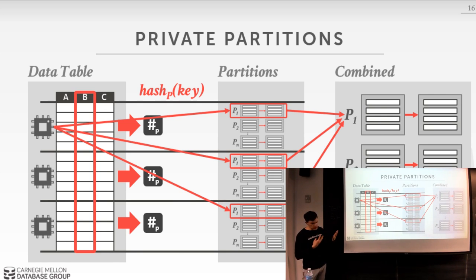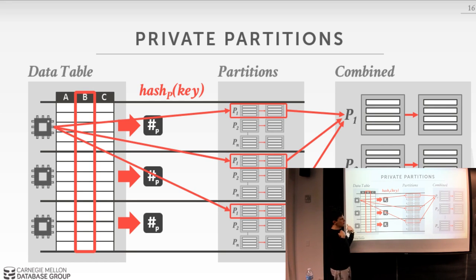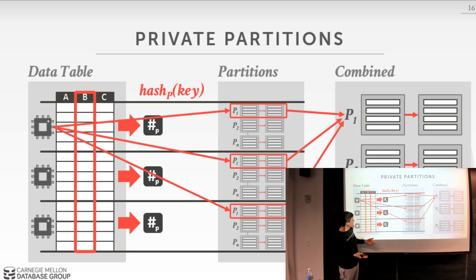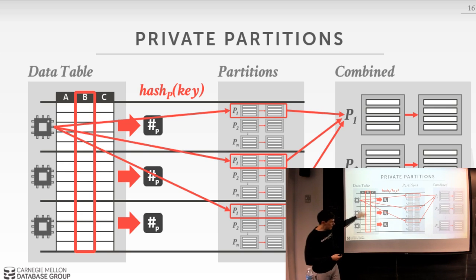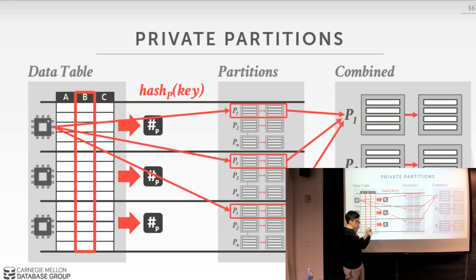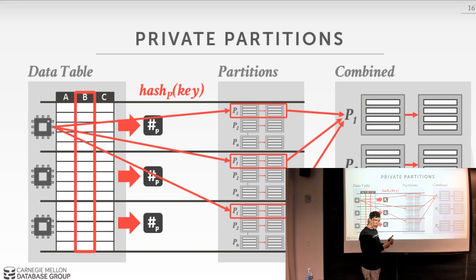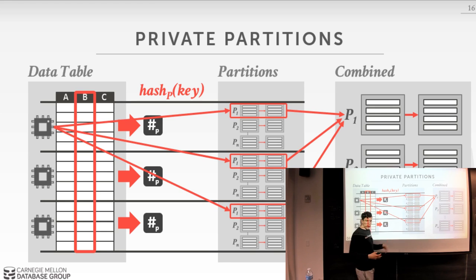Another consideration for partitioning is what you actually copy into the buffers. You could copy the entire tuple, or be smarter and store just the join key plus the offset to where the full tuple exists in your data pool. The copying cost can be expensive or cheap depending on your setup. If you don't copy everything, later when you need to stitch tuples together during the probe phase you'll have to go back and read the full tuple again — so the trade-off depends on what the join and data look like.